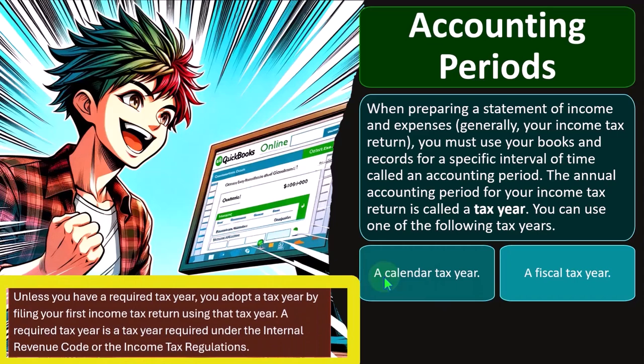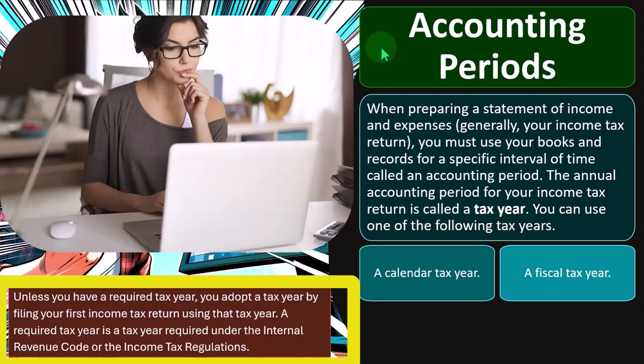Unless you have a required tax year, you adopt a tax year by filing your first income tax return using that tax year. So when you file your first tax return, it becomes quite important to double check things such as: what's your accounting period? Usually it's going to be a calendar year, but make sure that's what you want. If you want something other than that after filing the first tax return, it's going to be difficult, because one of the major accounting principles also reflected in the tax code is consistency.